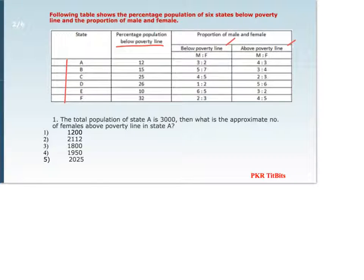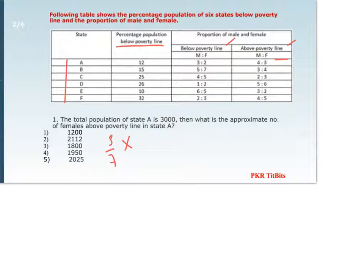The first question: the total population of state A is 3000, then what is the approximate number of females above poverty line in state A? So the total population is given as 3000. Females above poverty line in A — the ratio is 3 by 7. The population below poverty line is 12%, so we have 88% as population above poverty line.